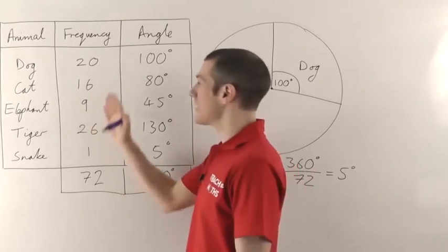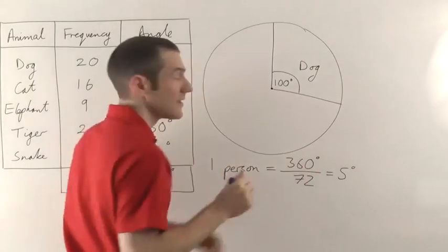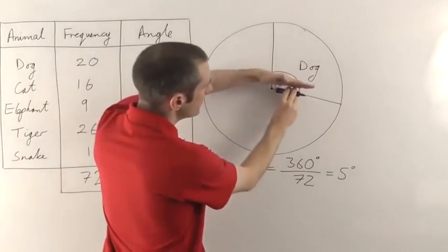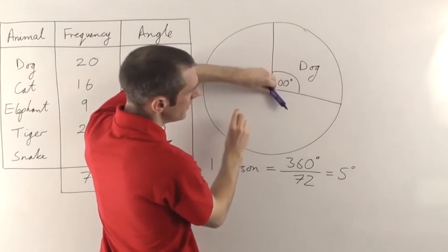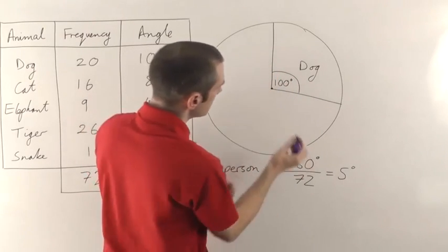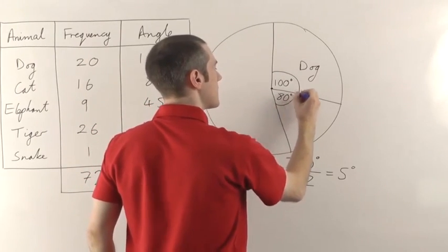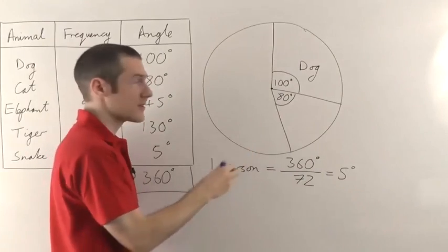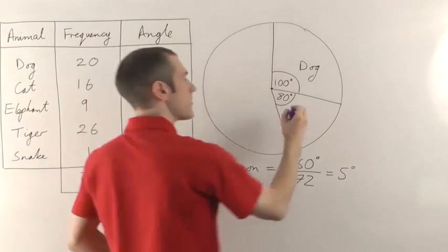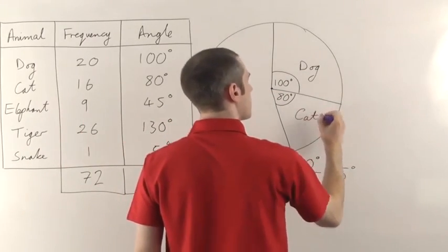So next up is the cat, that needs to be 80 degrees. Now this time, you start with your protractor sitting on this line, and you're going to be measuring around 80 degrees that way. So again, 80 degrees is going to be about there. So I'm saying that that wedge is 80 degrees. You measure that with your protractor. So that's going to be the cat.